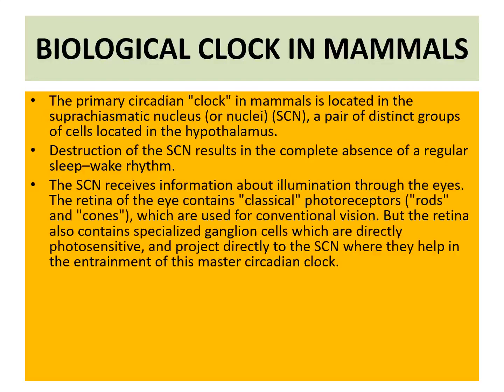SCN receives information about illumination through the eyes. The retina of the eye contains classical photoreceptors — the rod cells and the cone cells — which are used for conventional vision. But the retina also contains specialized ganglion cells which are directly photosensitive.